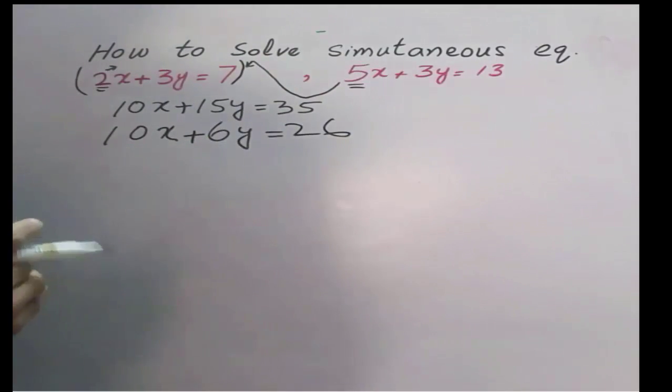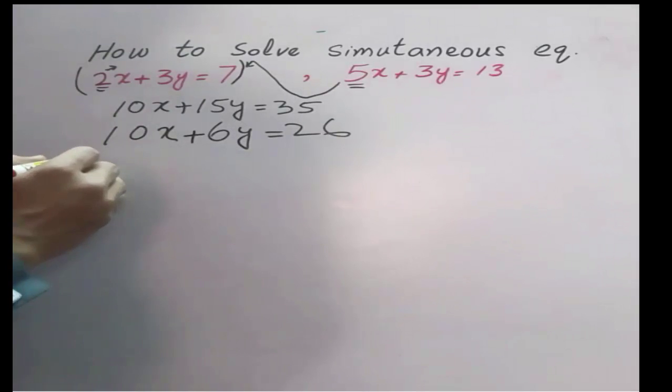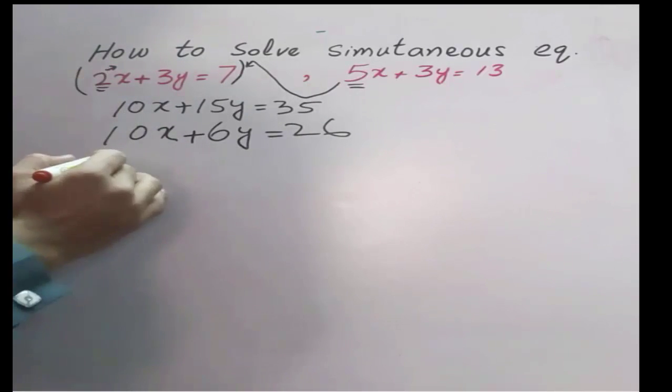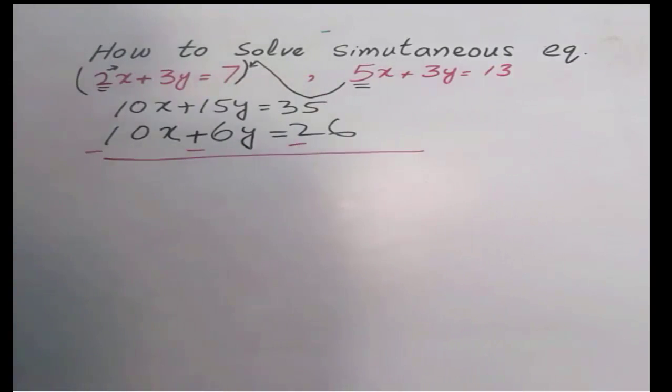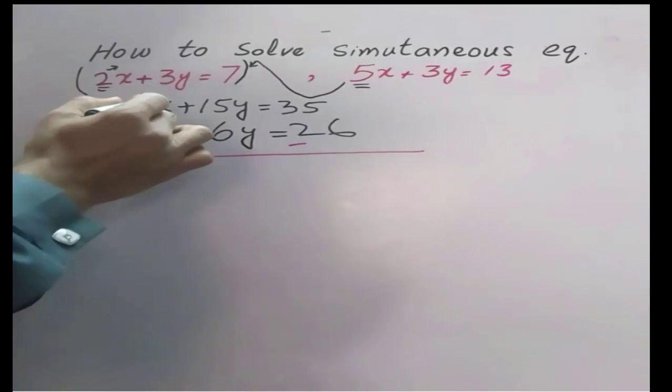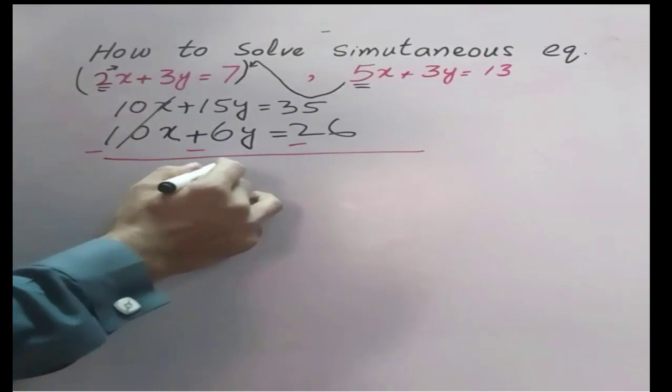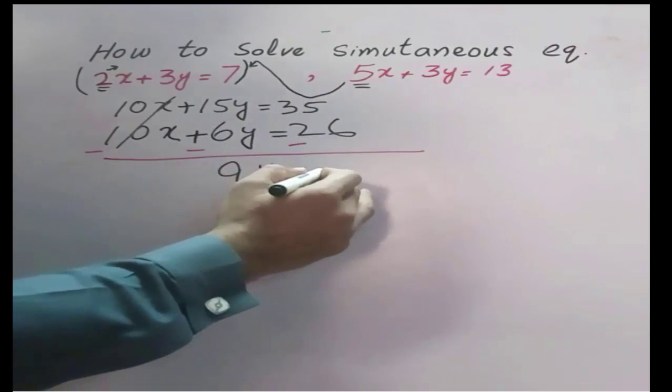See, the coefficient of x are balanced, so subtract. This 10 would be cut off with this. 15 minus 6 is 9y is equal to 35 minus 26 is 9.